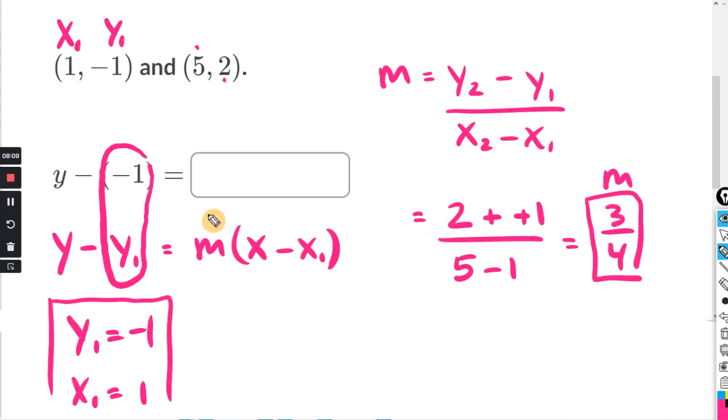m we said was 3 fourths. So that would go there. And then x minus x1. x1 is just 1. So for x1, we're going to use 1 and you just put that in the box. So we're going to enter 3 fourths times parentheses x minus 1.